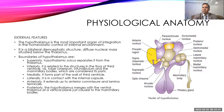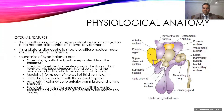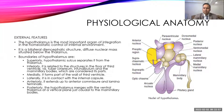The hypothalamus modifies both sympathetic and parasympathetic activity, which is why it is also called the head ganglion of the autonomic nervous system. These nuclear masses are present bilaterally on both sides of the brain.